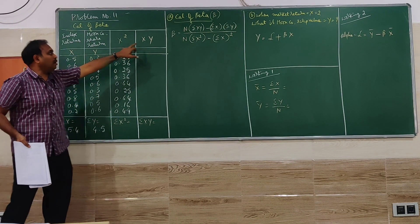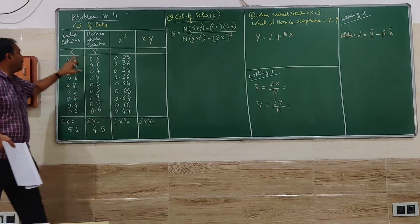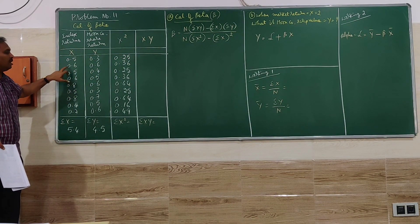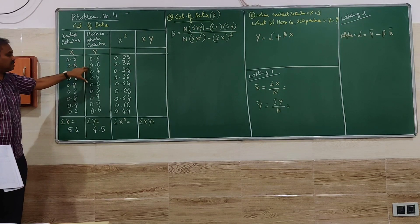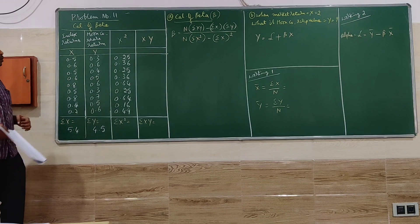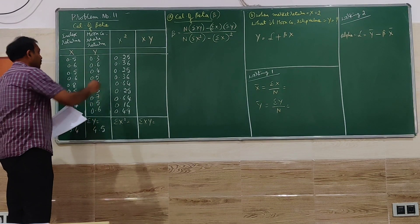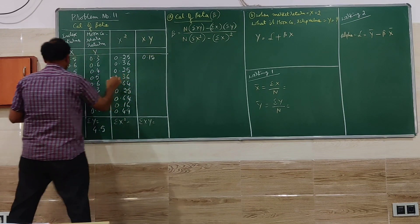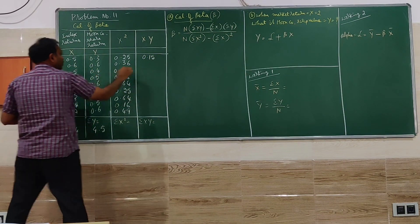Then we have to go for the next column X into Y. X into Y, we have to do 0.5 into 0.3 similarly, 0.6 into 0.6, 0.5 into 0.4. We have to do the multiplication there. 0.5 into 0.3 is 0.15, 0.6 into 0.6 is 0.36.